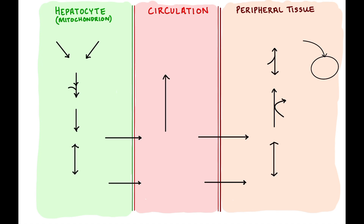What do we use to make ketone bodies? Remember that this occurs after a long fast, so we've already used glycogen. We've already gone through as much gluconeogenesis as possible. Now we're down to burning fat and burning amino acids — that is what is used to make ketone bodies. Fatty acids primarily, and to some degree amino acids, in particular the ketogenic amino acids. You'll want to remember at least two: leucine and isoleucine, which are strictly ketogenic.